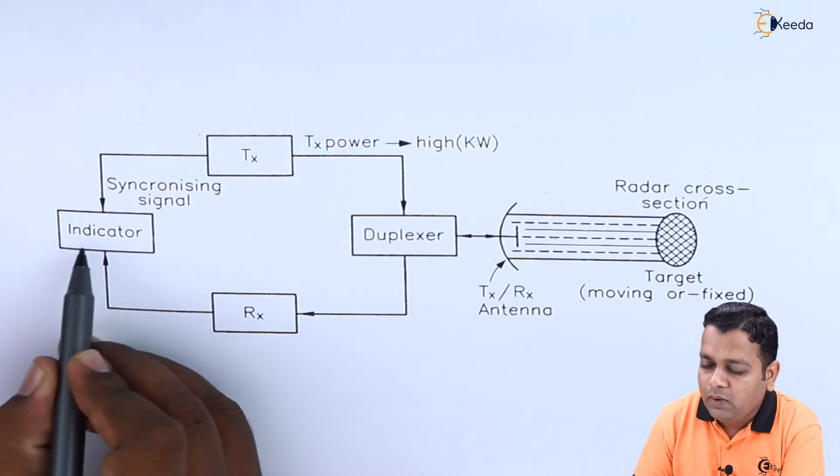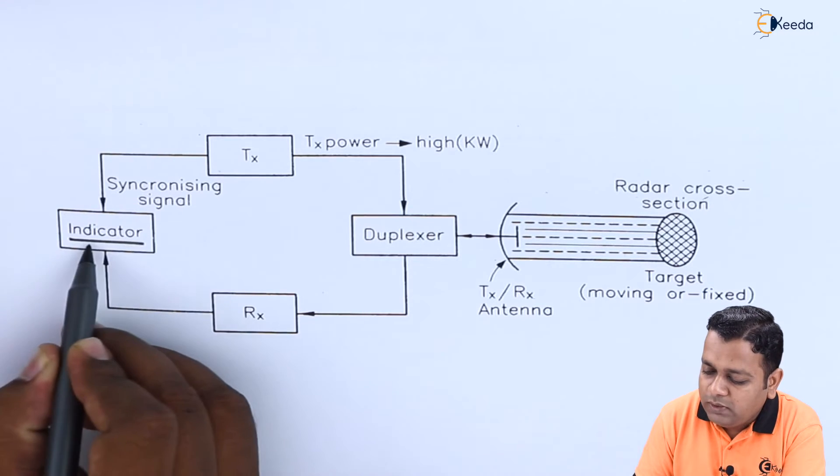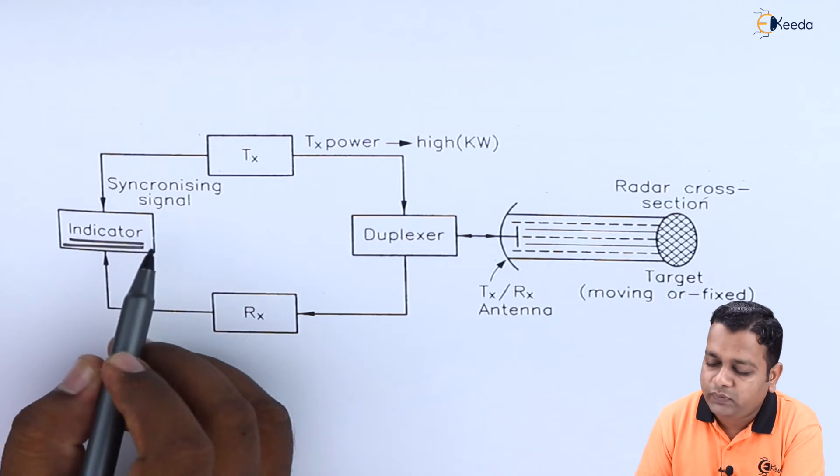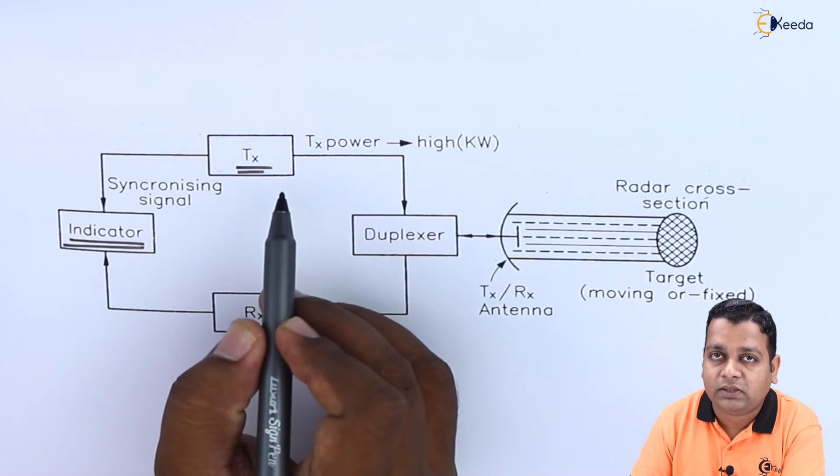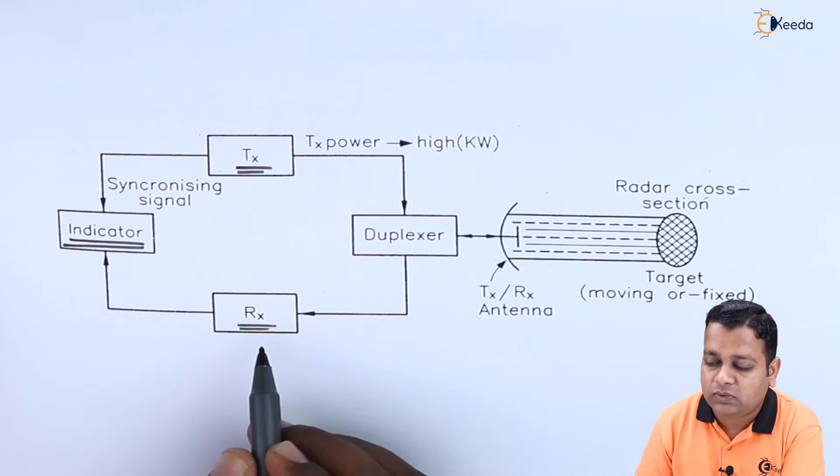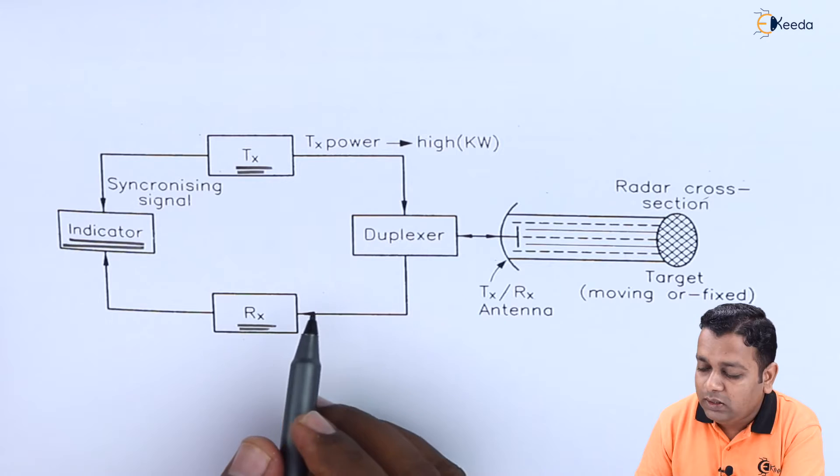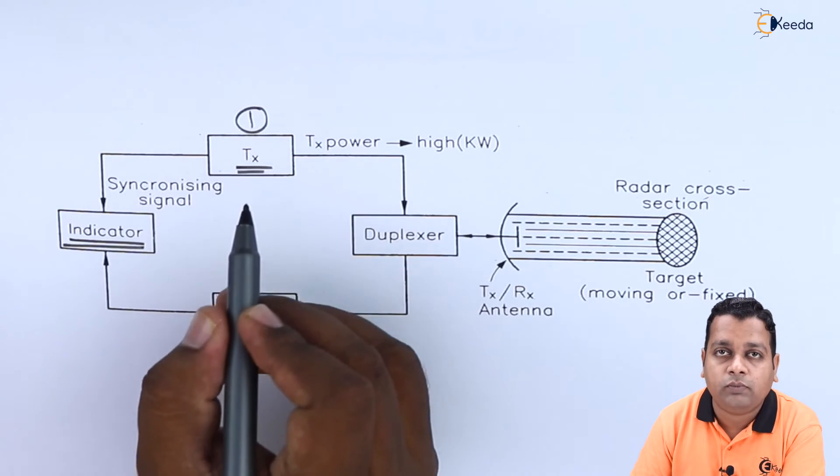Here, instead of having the radar display, we have named this particular block indicator. This is one and the same. T suffix X represents the transmitter section. The R suffix X represents the receiver section.